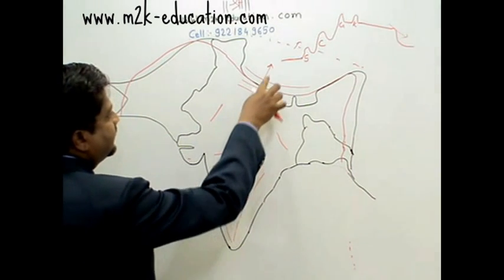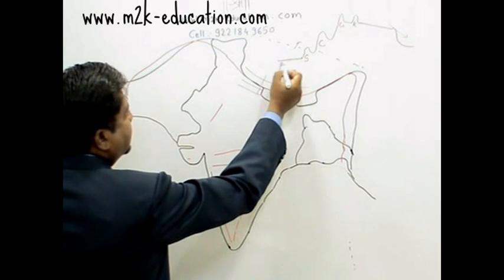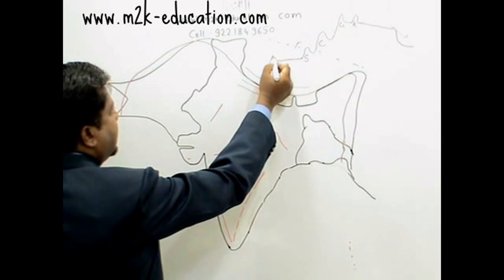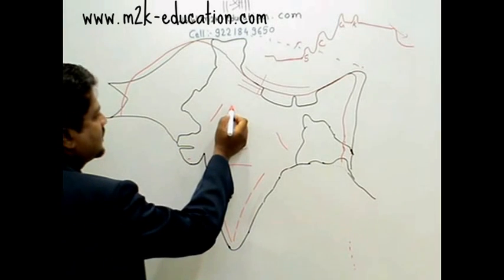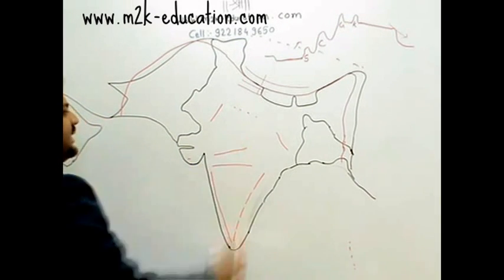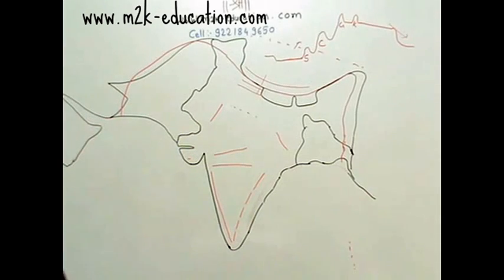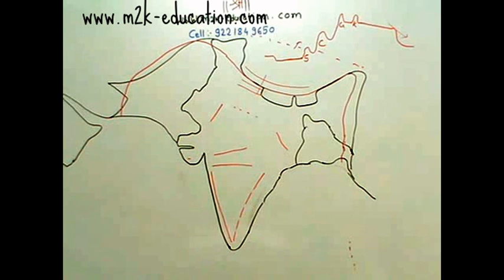Now here you will find this part — that is the North Indian plain. There is a small height here, and here height is more, to explain the river system and the natural flow.